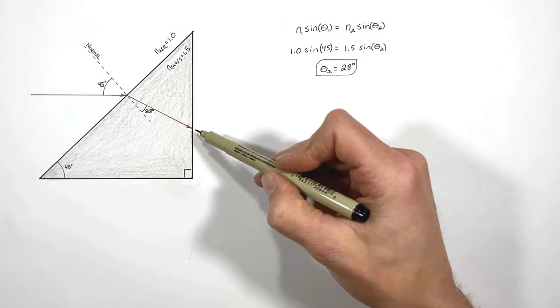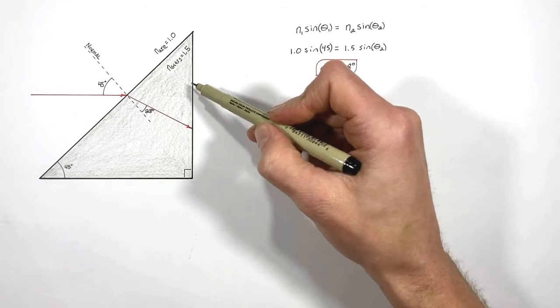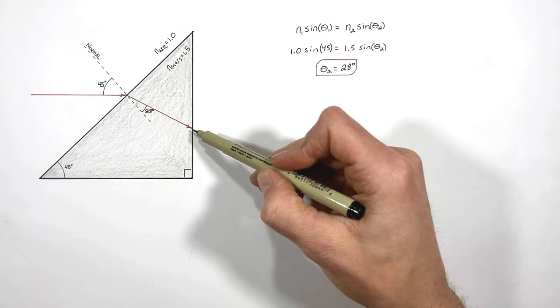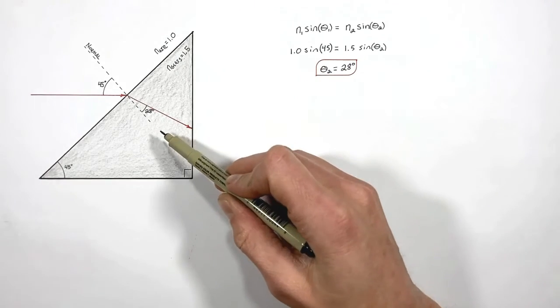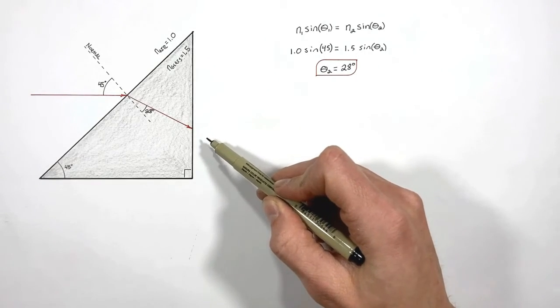Now once this ray has traveled through the glass, it's going to try to exit the prism over here. When the ray exits the prism, it's going to be traveling from glass into air. So again, it will be refracted according to Snell's law.